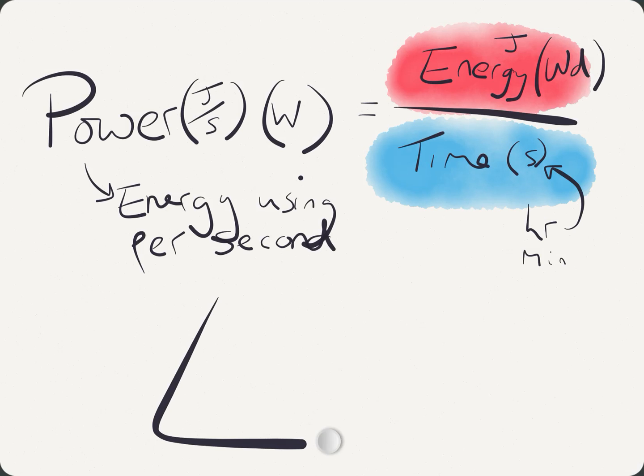Again, triangle, if we want to rearrange it, and we end up with something that you may have at home, a pet. And again, cover up the one you want. We can find E is PT, and we can find T is E over P. Good point to pause. Have a go copying.